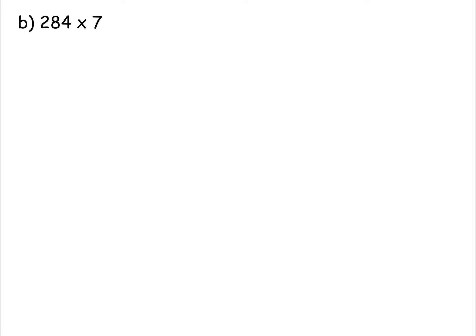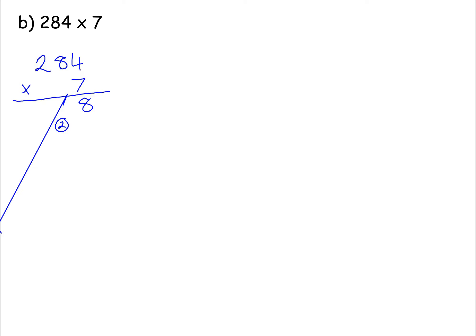Here we have 284 times 7. Let's try the traditional method first. We have 284 multiplied by 7. First, 4 times 7 is 28 — put the 8 there, carry the 2. 8 times 7 is 56, add the 2 that you carried, giving 58 — put the 8 there, carry the 5. Then 2 times 7 is 14, add the 5, giving 19 — put the 9 and the 1. So that's your traditional method.